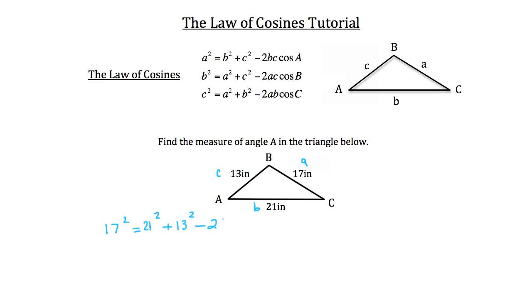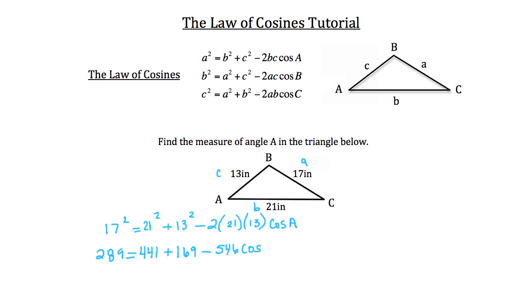Minus 2 times side length b, which is 21, times side length c, which is 13, times the cosine of angle A, which we're solving for. So 17 squared is 289, equal to 21 squared which is 441, plus 13 squared which is 169, minus 2 times 21 times 13. And 2 times 21 times 13 is 546, times the cosine of angle A.